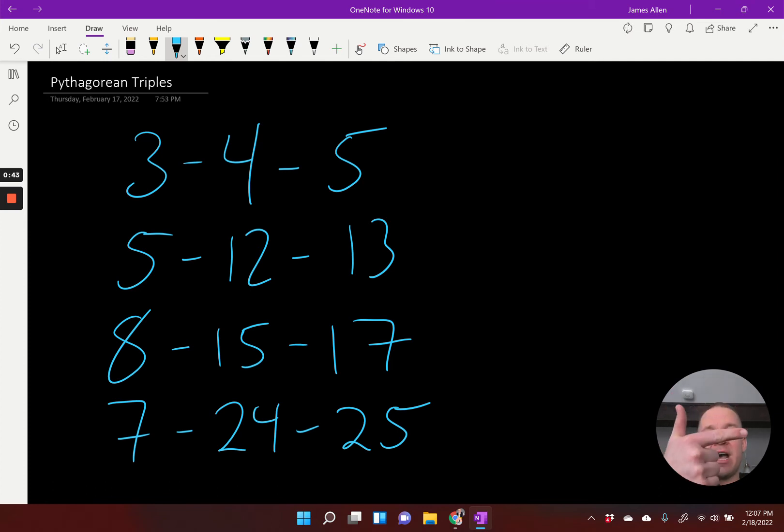Now I can multiply or divide by any number with these and they will still hold true. Meaning I could have a 6, 8, 10 triangle. That's a 3, 4, 5 that's all been doubled.